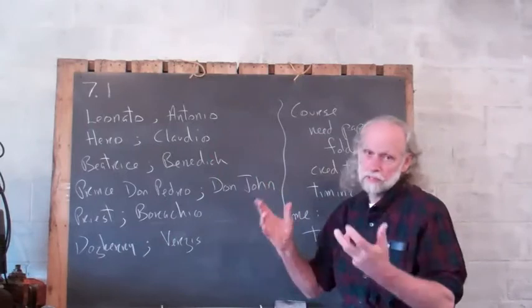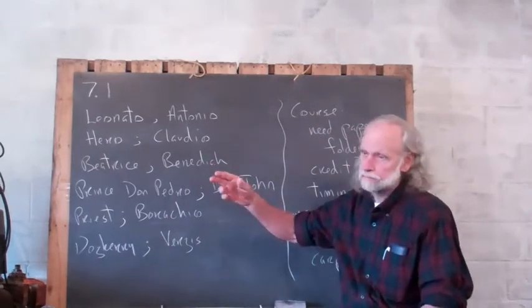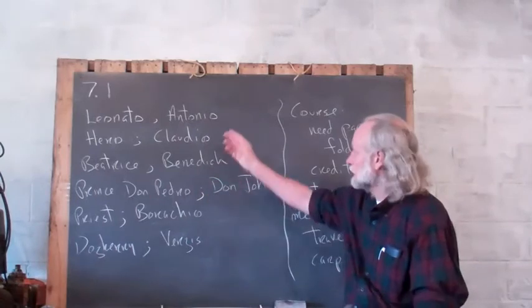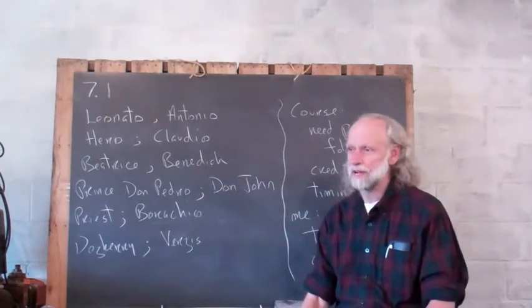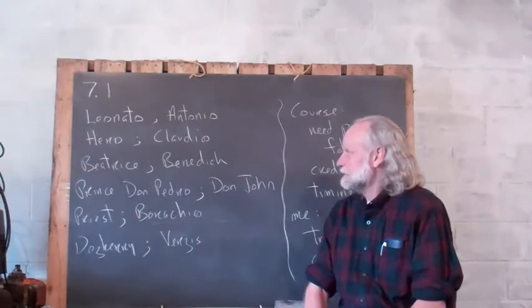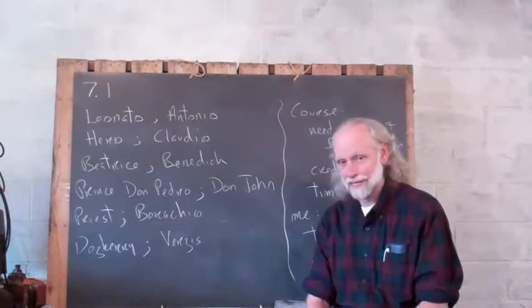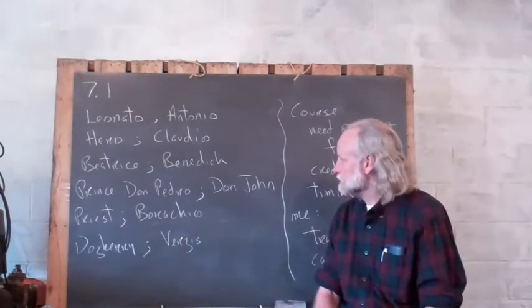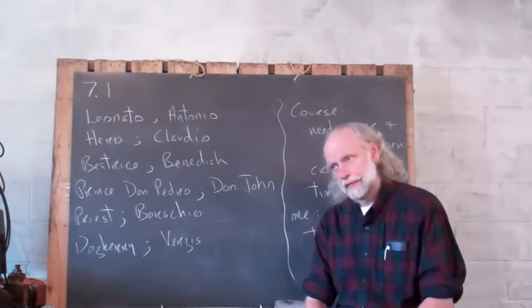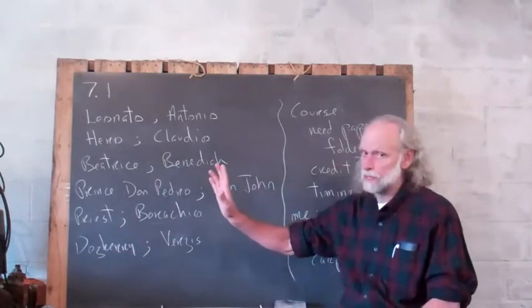Now, Leonato, he's the old guy. I'll leave this on the board. Leonato, the old guy, pretty much owns the villa. Antonio's his brother, not a major character. I told you I liked the way he dances. Hiro is Leonato's daughter. And Claudio is her true love by the end. Beatrice is Hiro's cousin. That would be Leonato's niece, not Antonio's daughter.